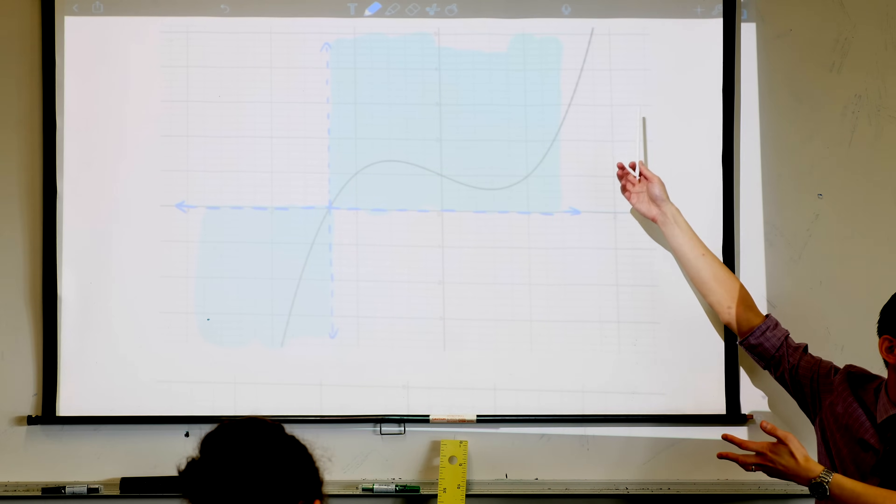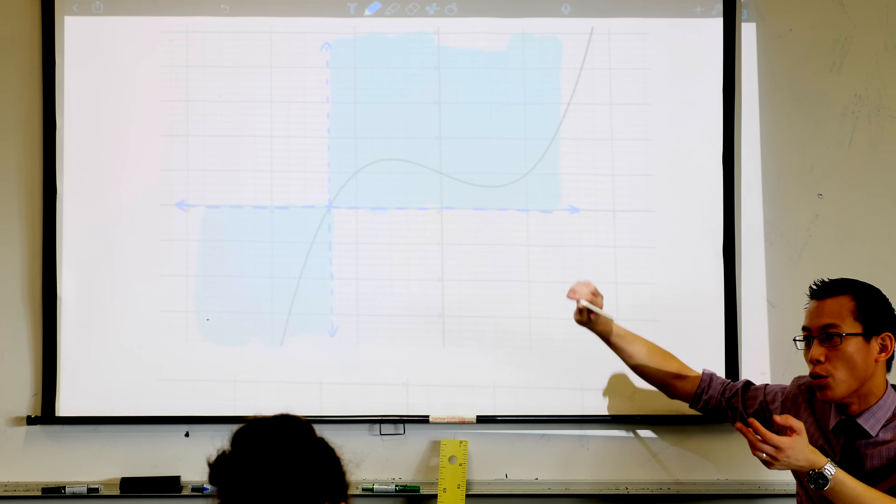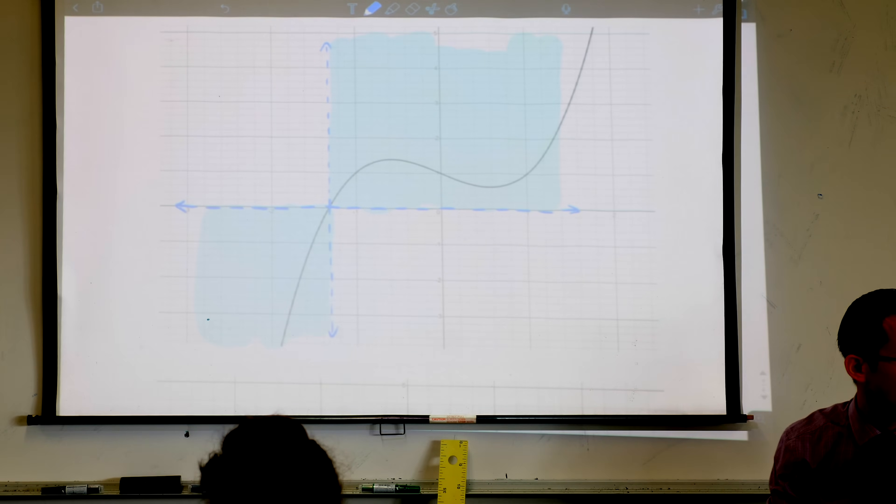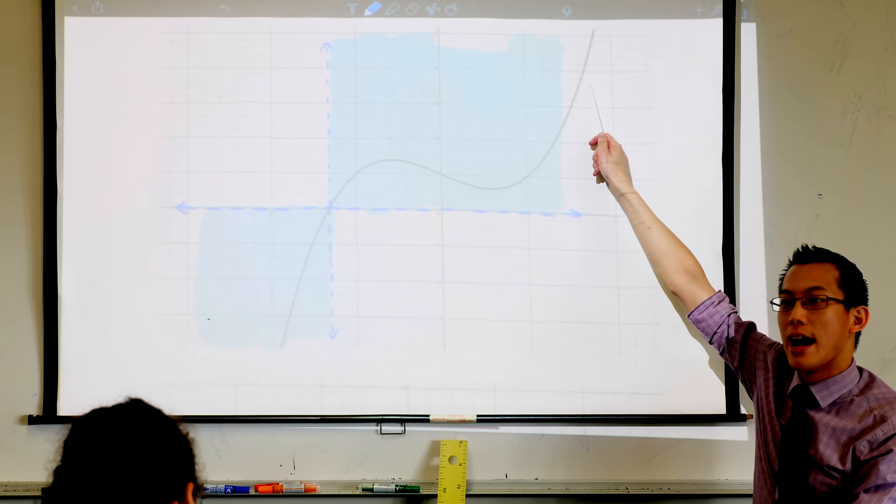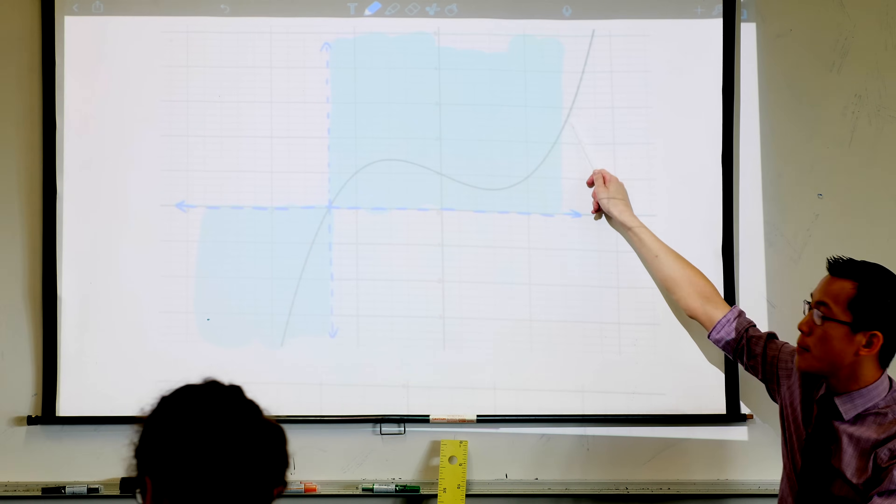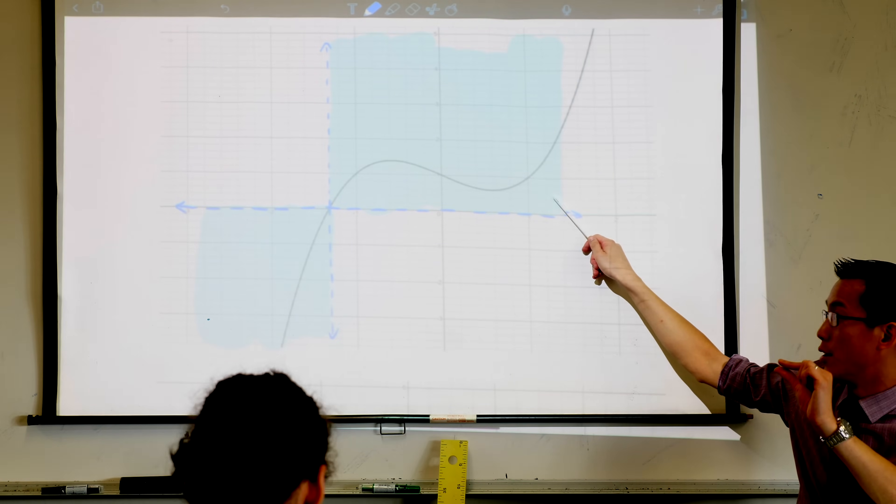It's just getting huge, right? Which means for the reciprocal, the denominator is getting huge, and that makes the whole thing actually very small, okay? So over here, the original has large positive values, that means the reciprocal will have small positive values.